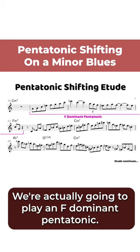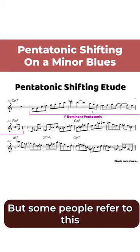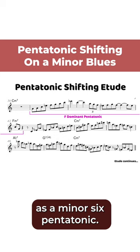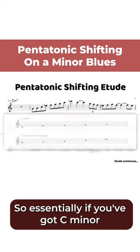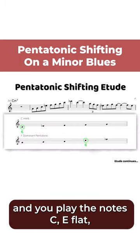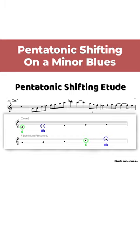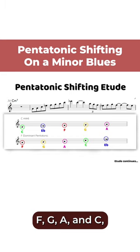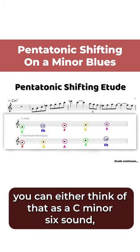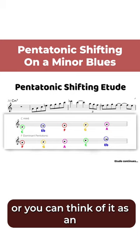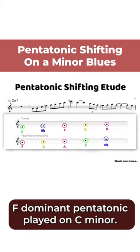To play an F dominant pentatonic — some people refer to this as a minor six pentatonic. Essentially if you've got C minor and you play the notes C, E flat, F, G, A, and C, you can think of that as a C minor six sound, or you can think of it as an F dominant pentatonic played on C minor.